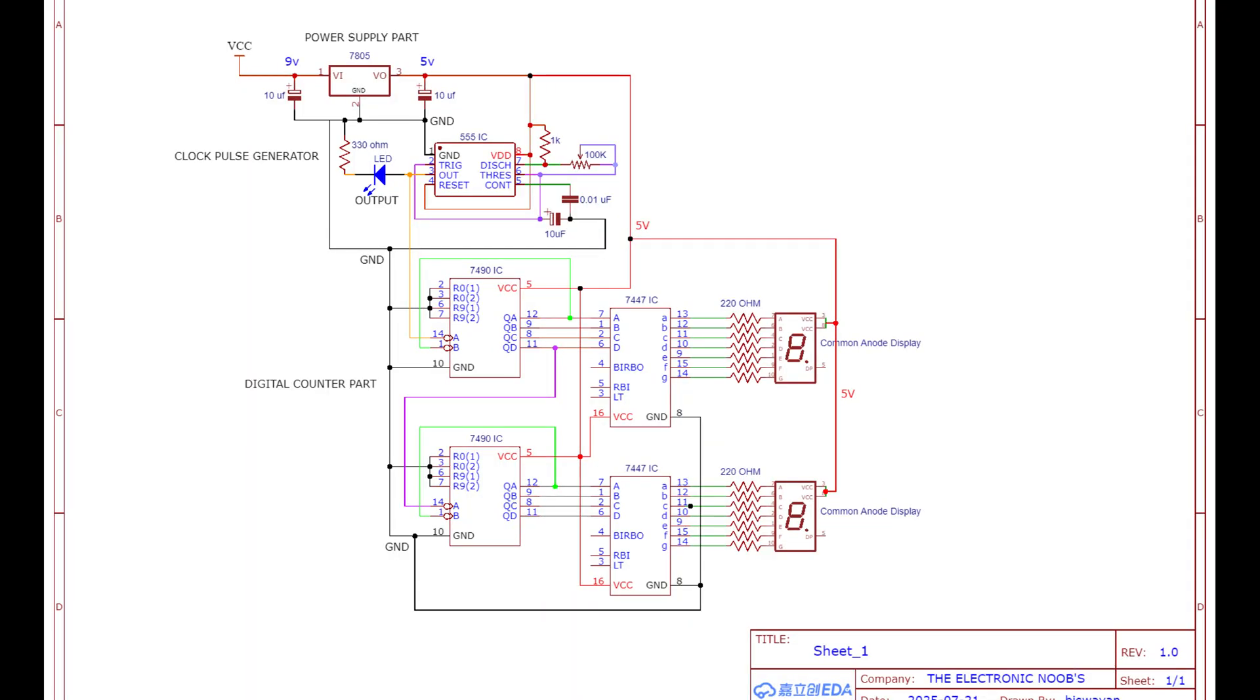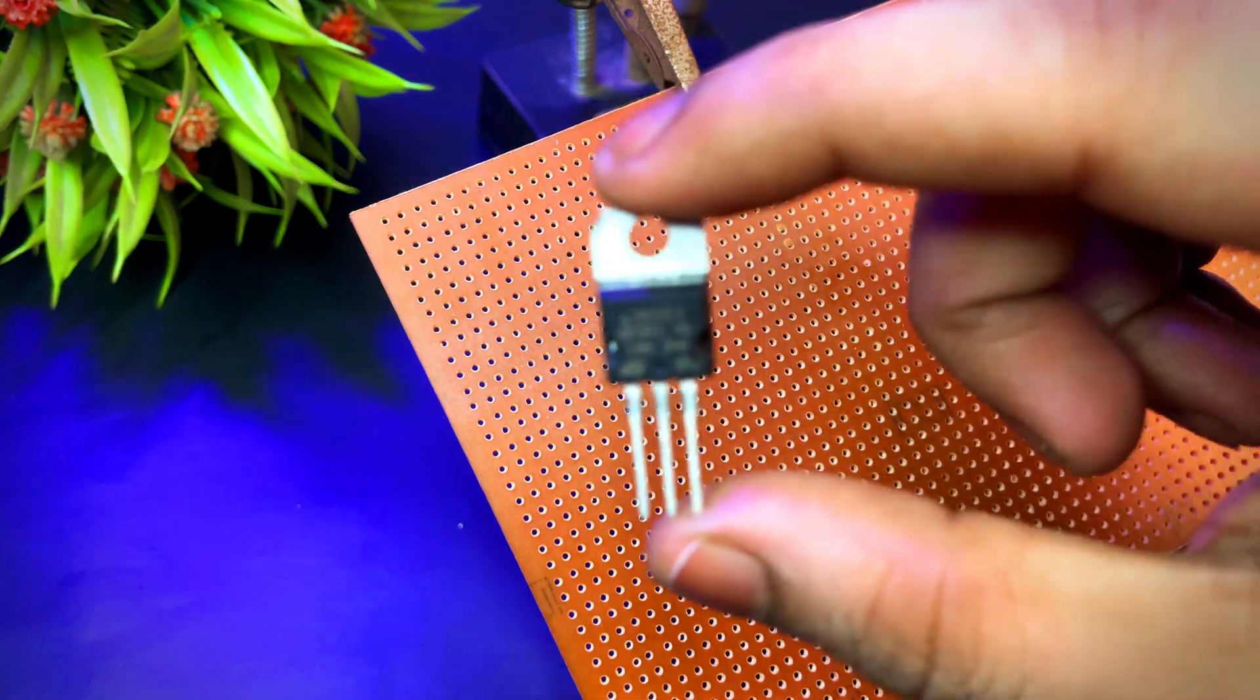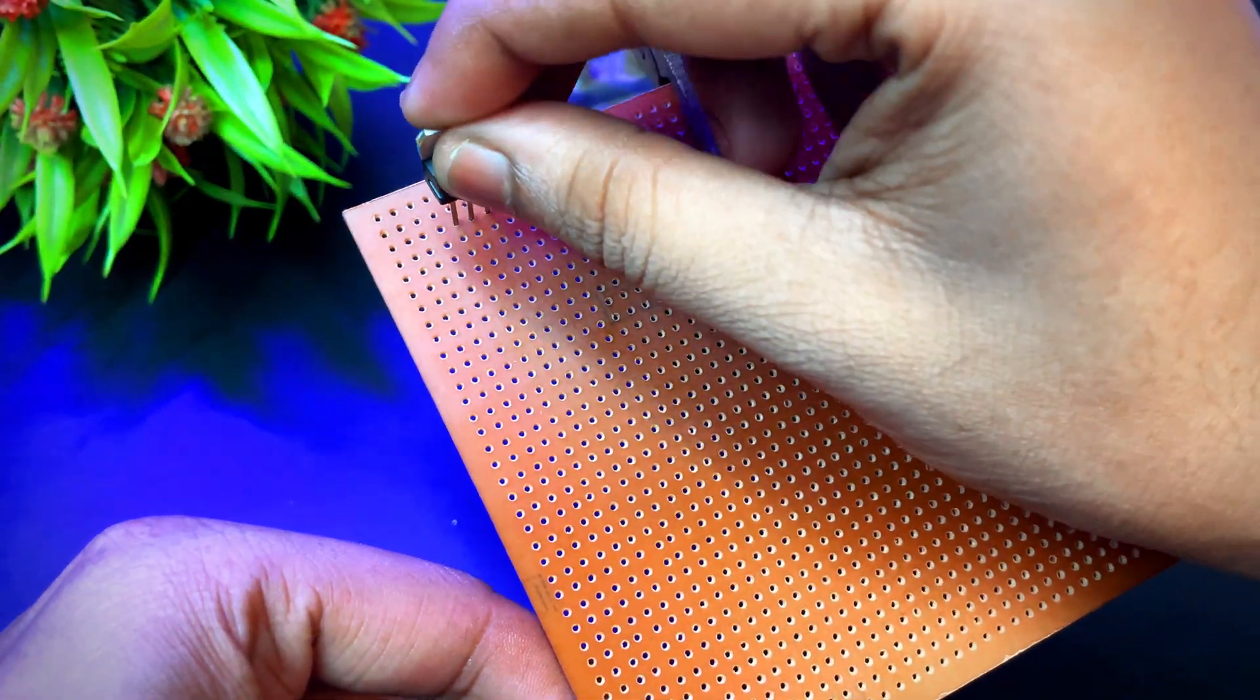This is the circuit diagram I divided into 3 parts. First one is power supply. Second one is clock generation. And the last one is counter part. First, let's build the power supply.